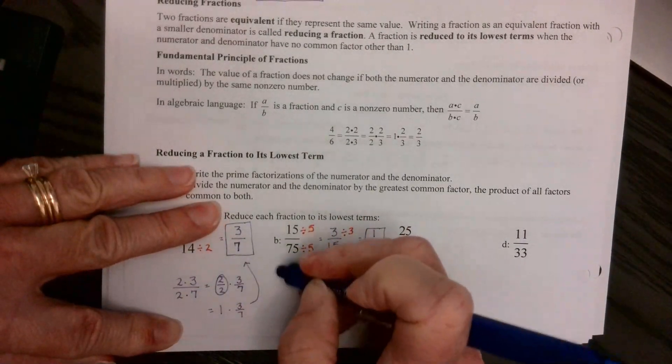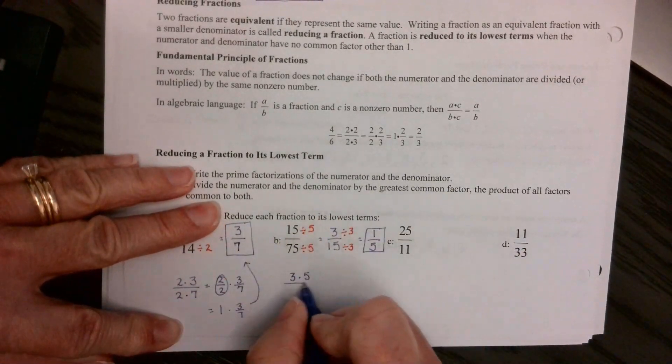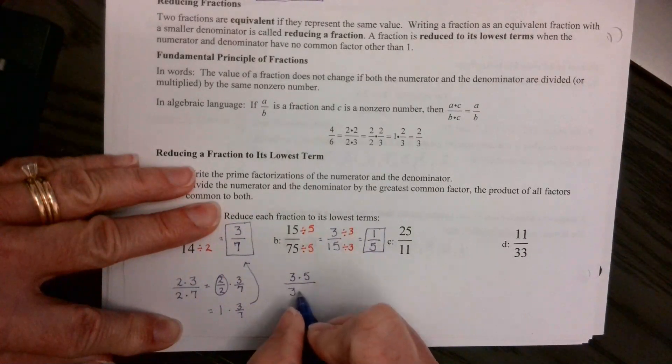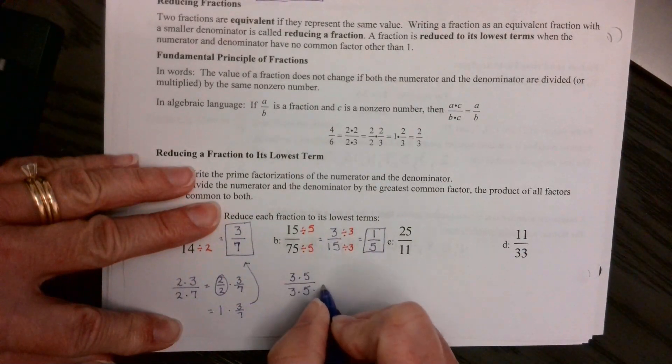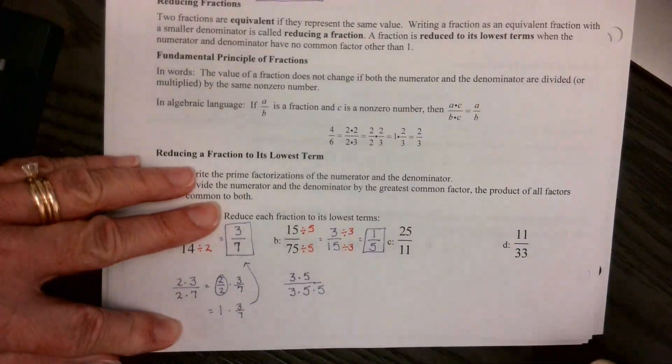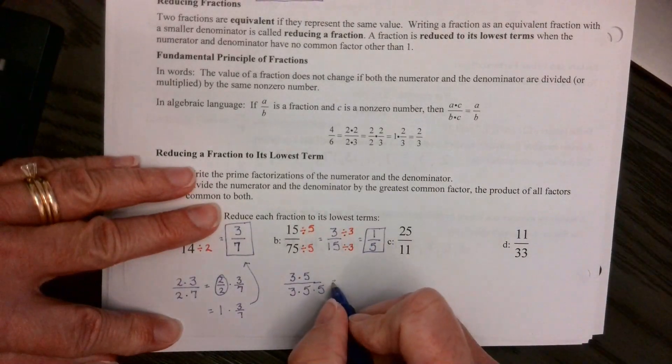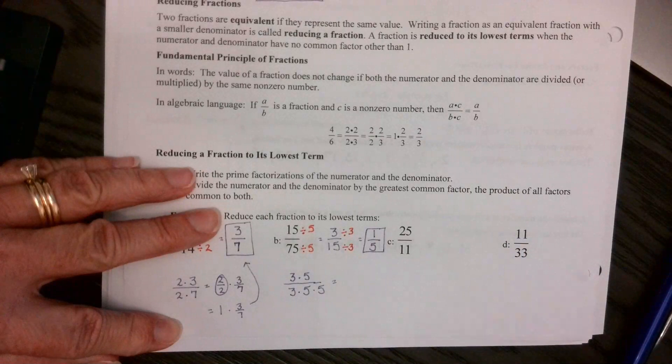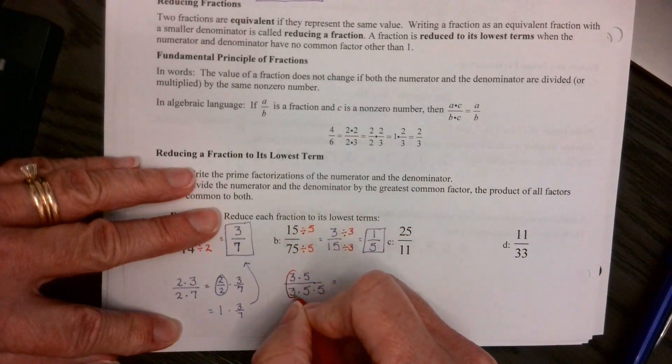If I did the factor tree for 75, I would have 3 times 5 times 5. So now, okay, this gives us 1, okay, 5 divided by 5 gives us 1.